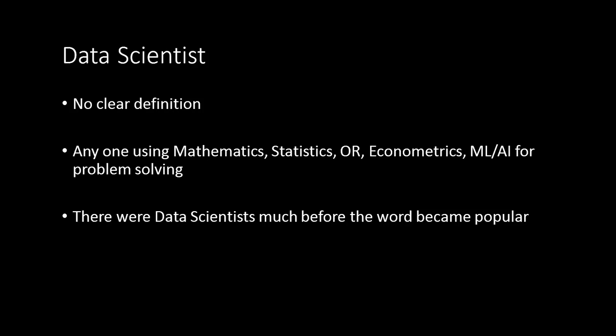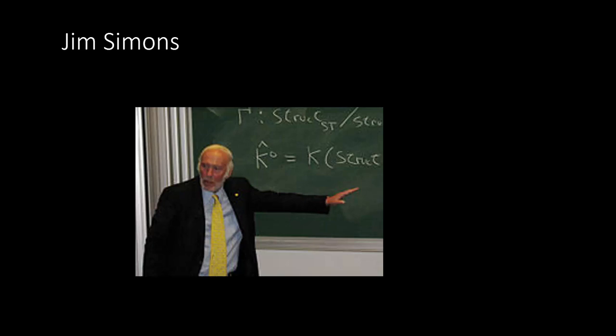One of them is Jim Simons. Jim Simons is a billionaire and is very successful as a hedge fund manager who has used data science—statistics, mathematics, many applied areas of statistics and mathematics—to make a fortune for himself. He is worth 16 billion dollars as we speak. Let me talk about in brief what he did and how he became so rich being a data scientist.